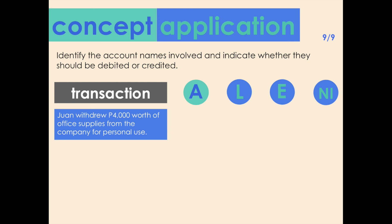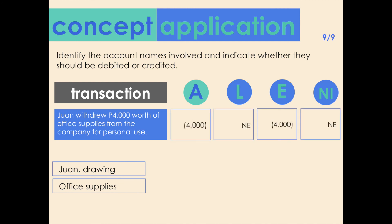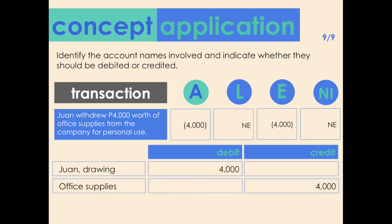Transaction nine: Juan withdrew 4,000 pesos worth of office supplies from the company for personal use. Accounts affected: the drawing account (Juan drawing) and office supplies. Assets and equity will both decrease due to the withdrawal of supplies amounting to 4,000. The drawing account should be debited since it represents a decrease in equity, while office supplies should be credited as this represents a decrease in assets. That's the last question for today — if you have any questions feel free to comment below.